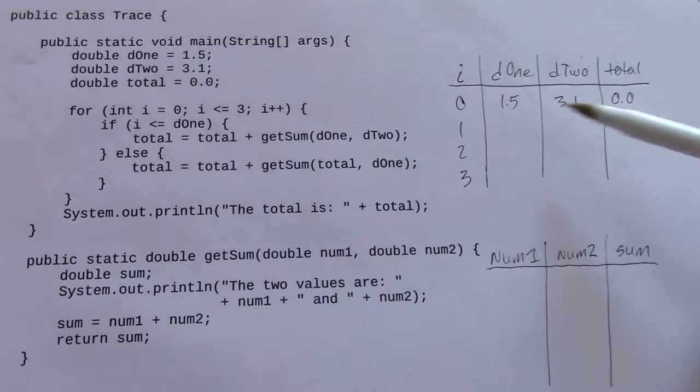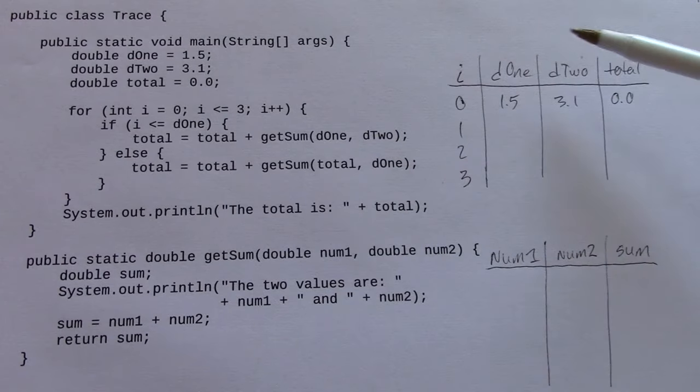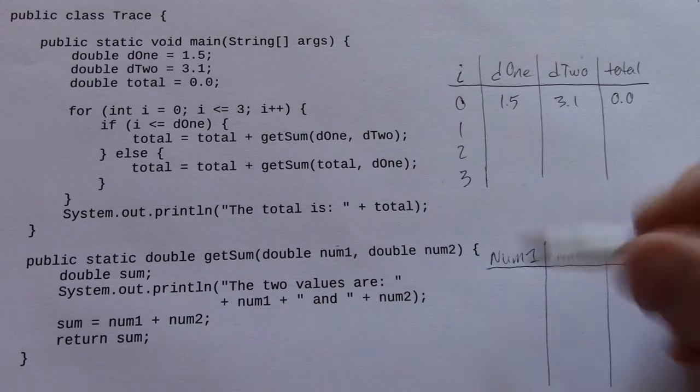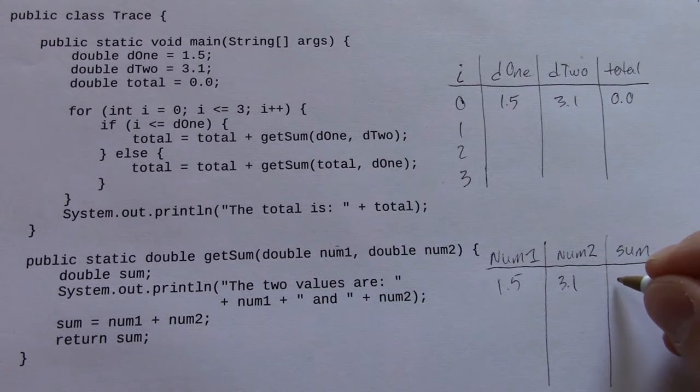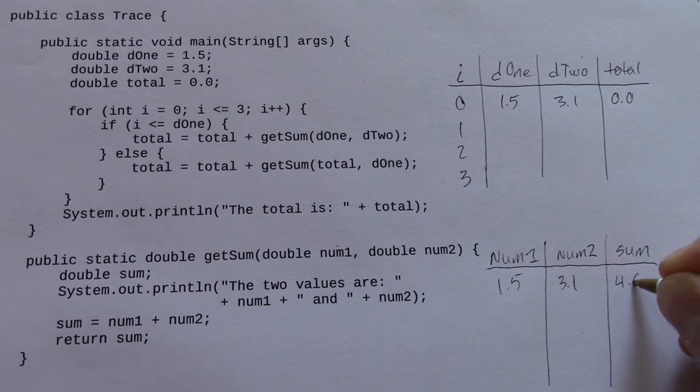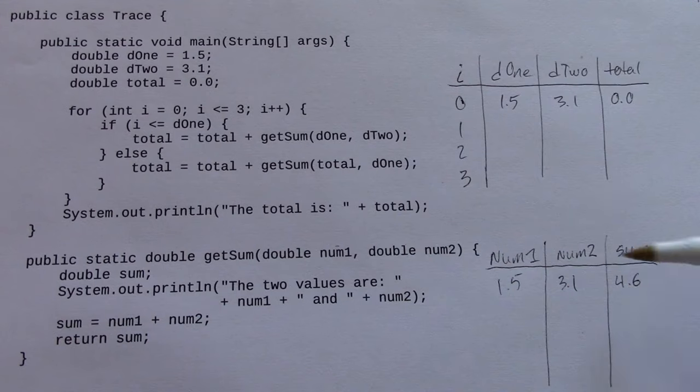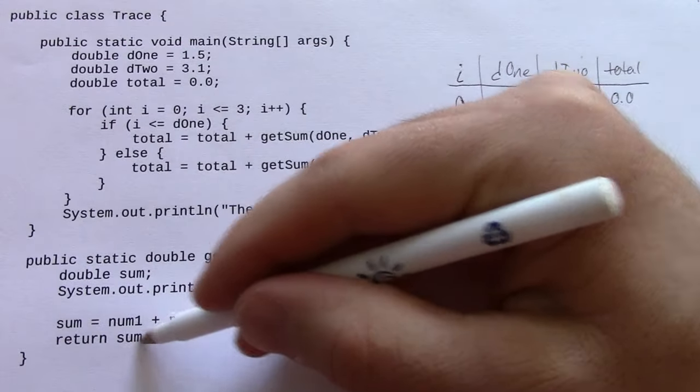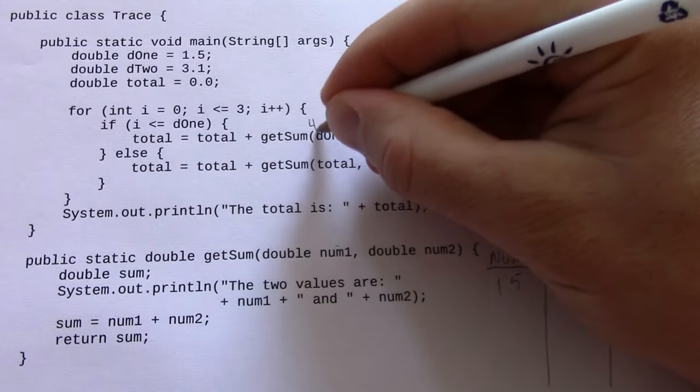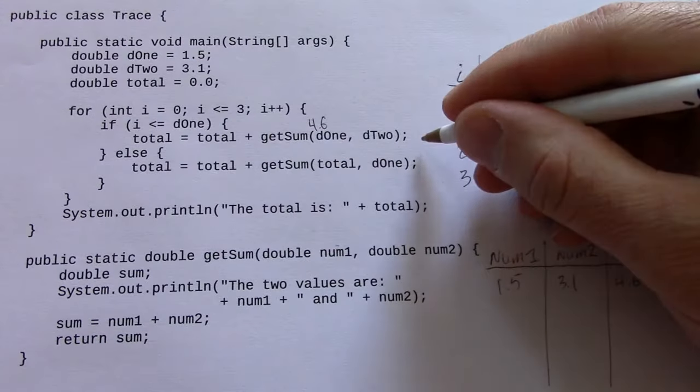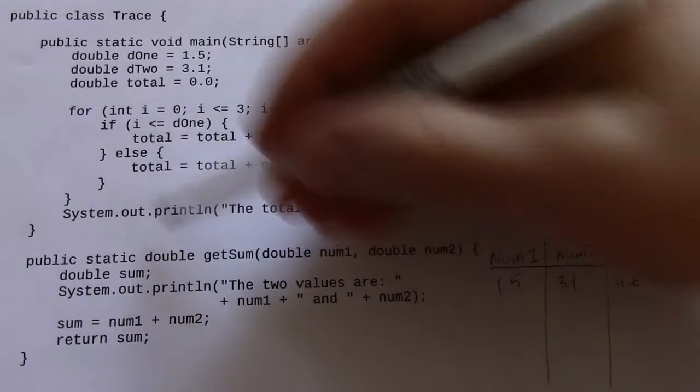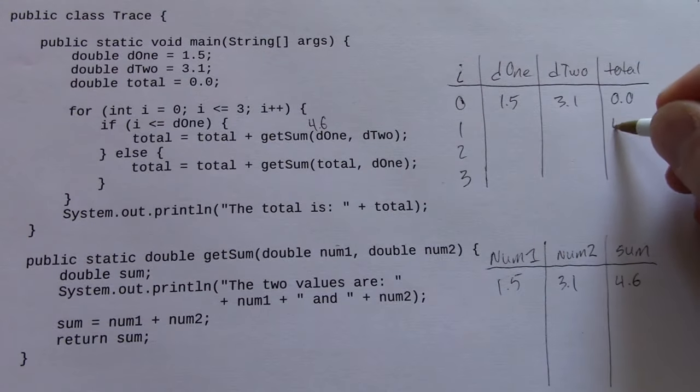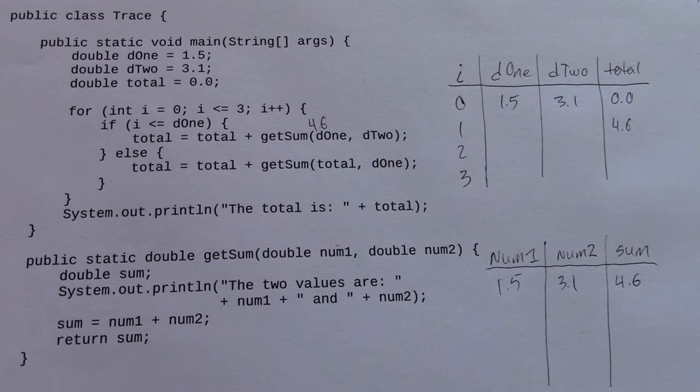So the first time this method is called, d1 and d2 are passed into num1, num2. So I've got the values 1.5, 3.1, and their sum is going to be 4.6. And that sum is then returned back up here. So at this point I've got 4.6 in this value. Total equals total plus 4.6. So the next time we loop around when i is 1, the total is 4.6 at the beginning of that iteration.